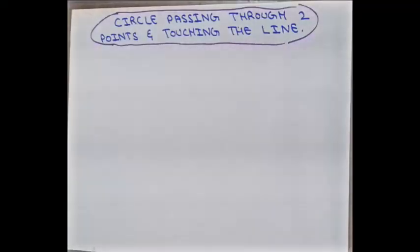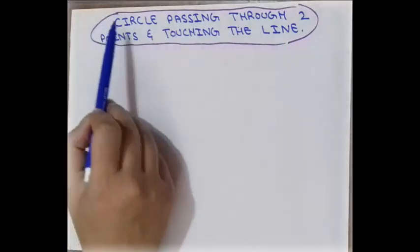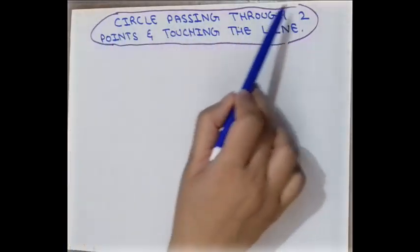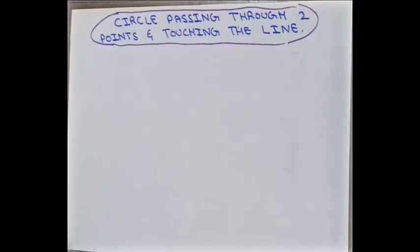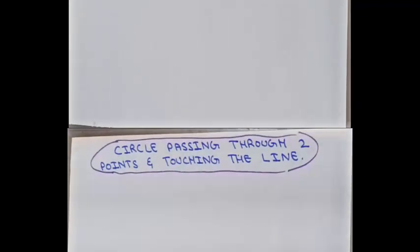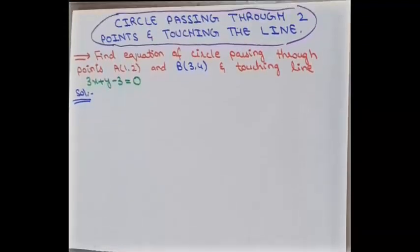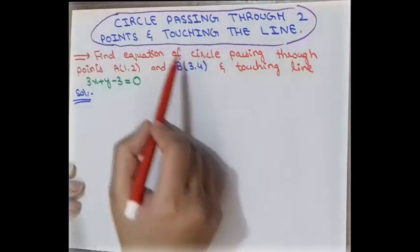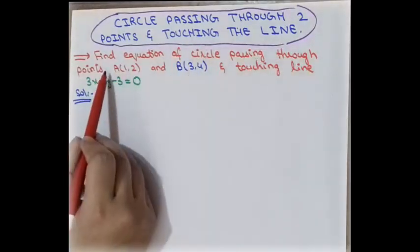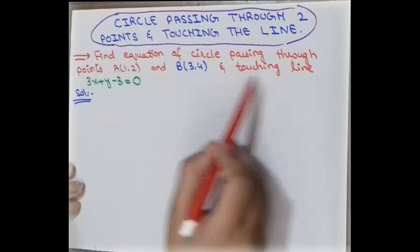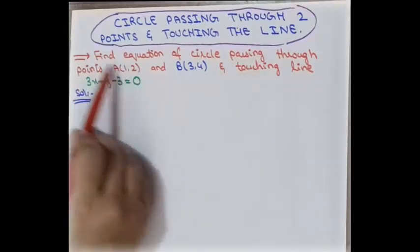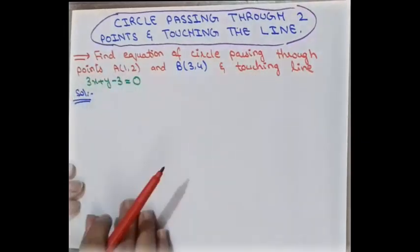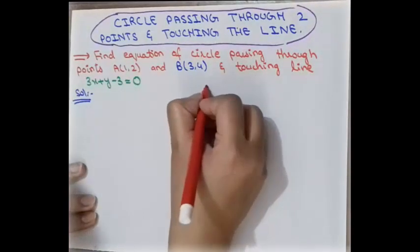In this video we will learn how to find the equation of a circle when a circle passes through two points and touches a line. For understanding this, let us take an example where we have to find the equation of a circle passing through points A and B and touching a given line.